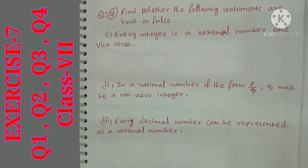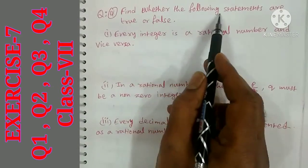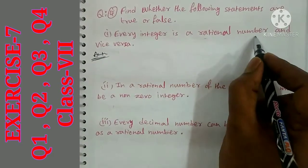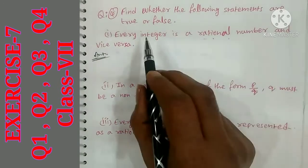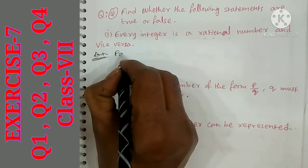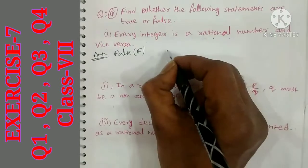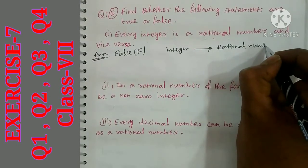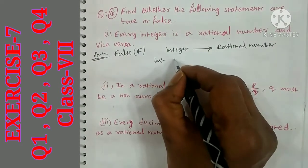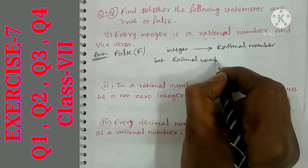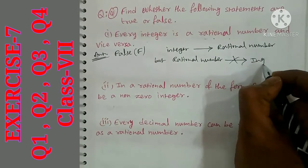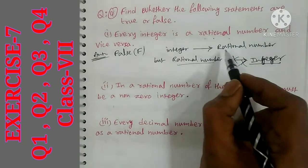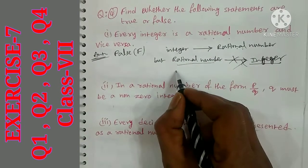Question number 4 — last part of this exercise and chapter: find whether the following statements are true or false. Statement 1: every integer is a rational number and vice versa. This is false. Every integer is a rational number — that part is correct. But not all rational numbers are integers.